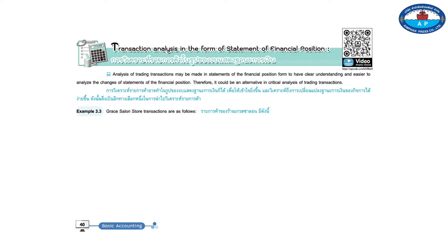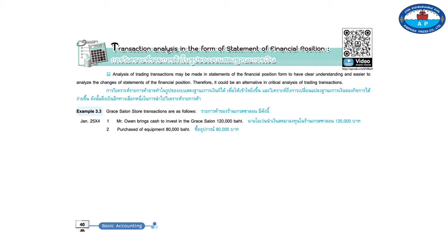Example 3.3: Grace Salon Store transactions are as follows for January 2554. Transaction 1: Mr. Owen brings cash to invest in the Grace Salon, 120,000 baht. Transaction 2: Purchase of equipment, 80,000 baht. Transaction 3: Purchased decoration on credit from the Trasso Store, 5,000 baht.